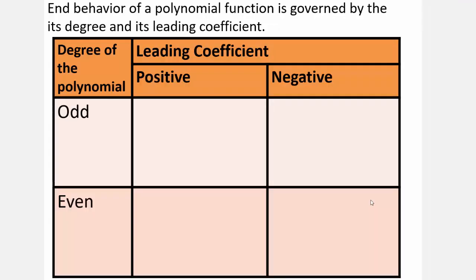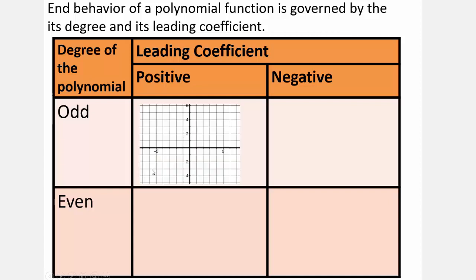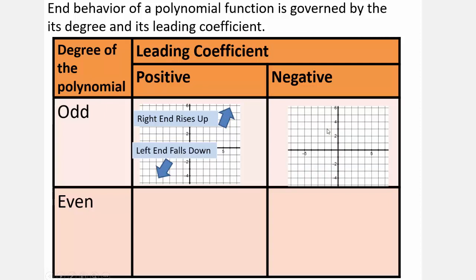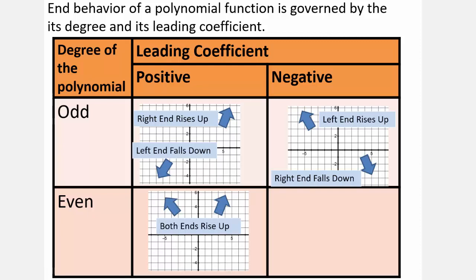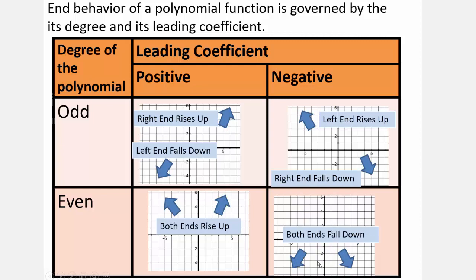Let's put that all together. It's helpful to make a chart showing how the degree and leading coefficient together determine end behavior. For an odd power with a positive leading coefficient — similar to x cubed — the left-hand side falls down to negative infinity and the right-hand side rises up. With a negative leading coefficient and odd power, the left-hand side rises and the right-hand side falls. For an even power with a positive leading coefficient — like x squared — both ends point up. With a negative leading coefficient and even power, both ends fall down.